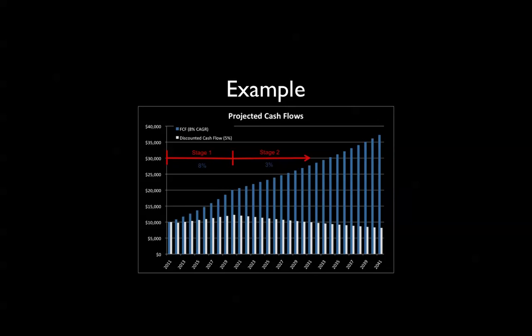So now we have an estimate of the value of this small business. If the owner is selling and says, 'I'll sell this business to you for a million dollars,' we know that price is probably a little too rich. On the other hand, if they say, 'I'm tired of running this business and I'll sell it to you for $400,000,' then we might have a good deal — we could buy this business for less than what it's actually worth. That's discounted cash flow in a nutshell.